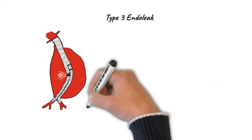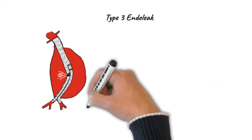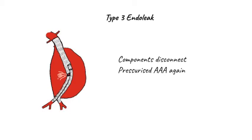A type 3 endoleak occurs when the graft components become separated from each other. The result is a high-pressure leak into the aneurysm sac, so the aneurysm is pressurised again and the patient is at risk of rupture again.